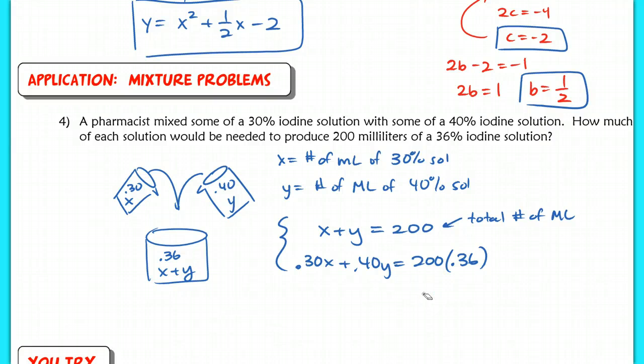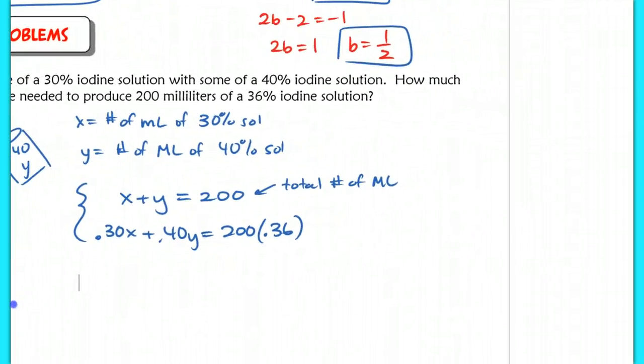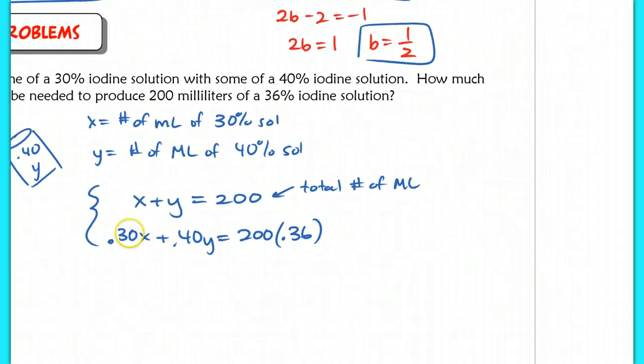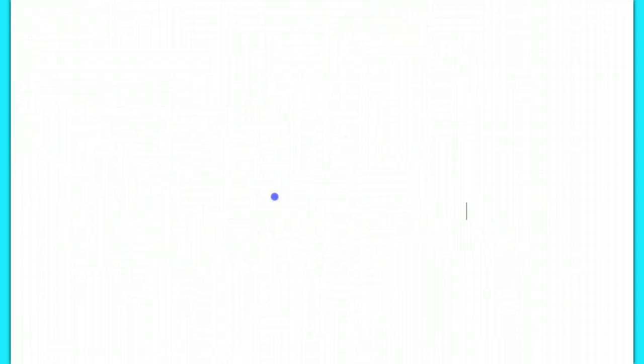But if we want to solve this, I would suggest getting rid of the decimals by multiplying throughout by 100. So let's simplify here. We have x plus y equals 200. I'm going to leave that equation alone. The bottom equation, 0.3x plus 0.40y equals, if I multiply out, is going to give me 72. Now, I want to get rid of the decimals here, so I'm going to multiply throughout by 100 to get a new equation. 30x plus 40y equals 7,200. And that top equation, x plus y equals 200, let's keep that the way it is.